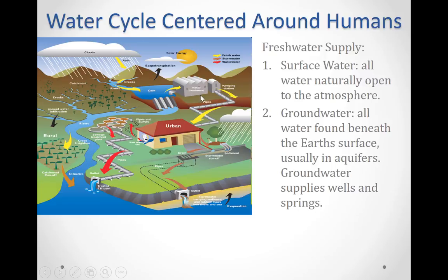Because this is surface water, it has to be treated and pumped into homes and businesses. Once utilized, humans produce sewage, which gets collected, treated again, and then pumped into water reservoirs, rivers, or oceans — thus completing the water cycle with the human component incorporated in it.